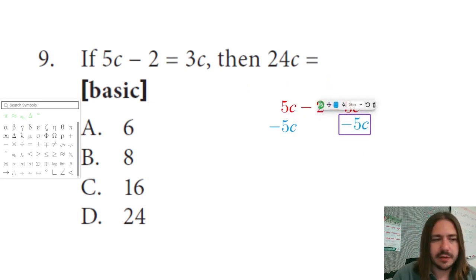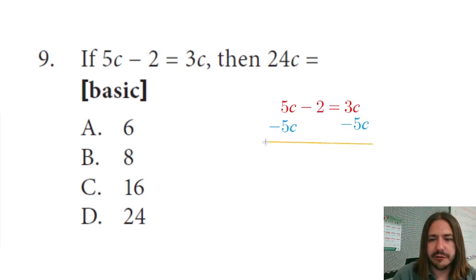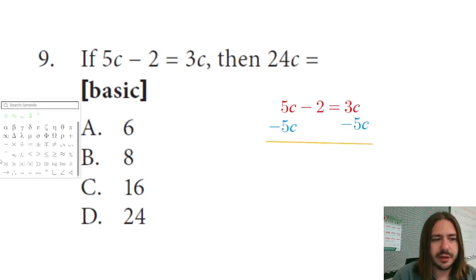So 3c minus 5c is going to be negative 2c. So we get negative 2 equals negative 2c.